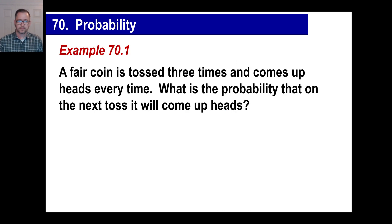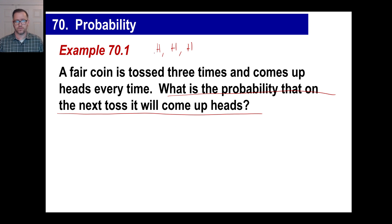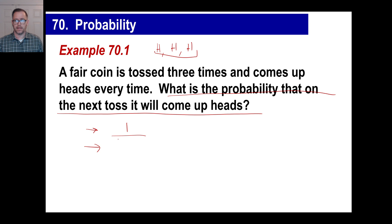Let's do a couple of examples. You have a fair coin; it is tossed three times and comes up heads every time. What's the probability that on the next toss it will come up heads? What you toss the fourth time has nothing to do with what you tossed the first three times. You still have one positive outcome — a head — and two possibilities, heads or tails. The probability is one out of two.